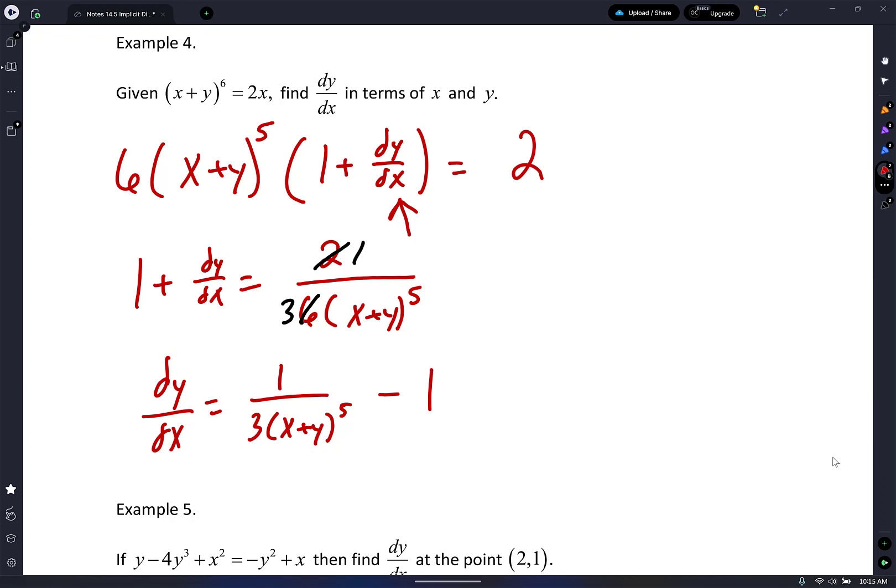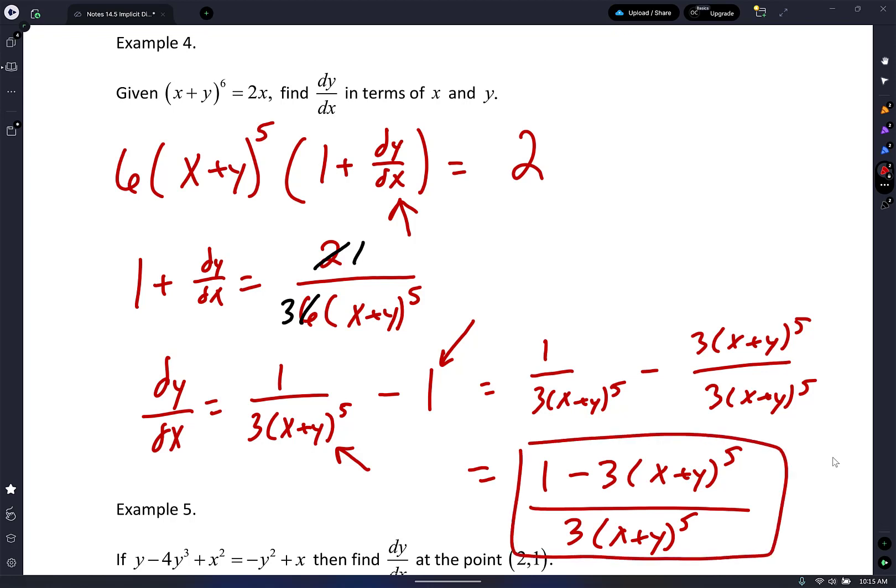All I've got to do now is move the 1. dy/dx equals 1 over 3(x + y)^5 minus 1. If this were multiple choice and you didn't see this exact answer, it could have... I'm pretty sure if it were free response they would just take this. You could always turn that 1 into whatever that denominator is. Just keep in mind we didn't do any calculus, it's just more algebra. We did a common denominator.